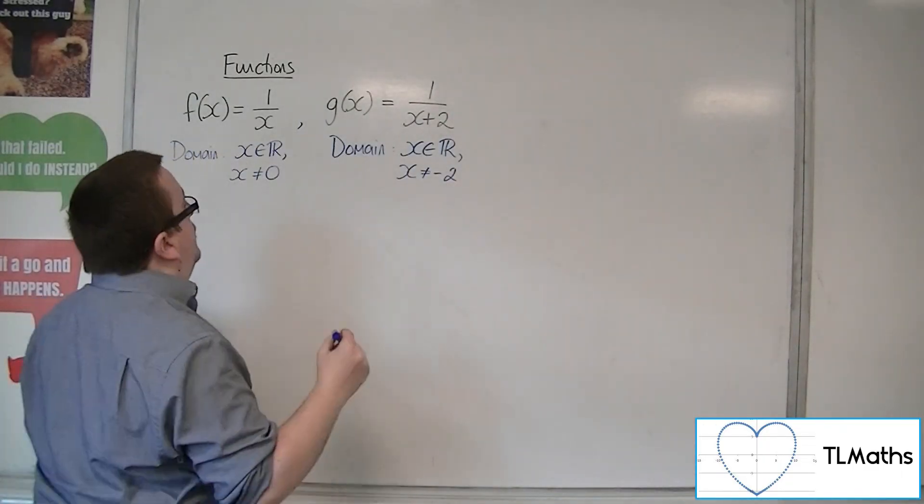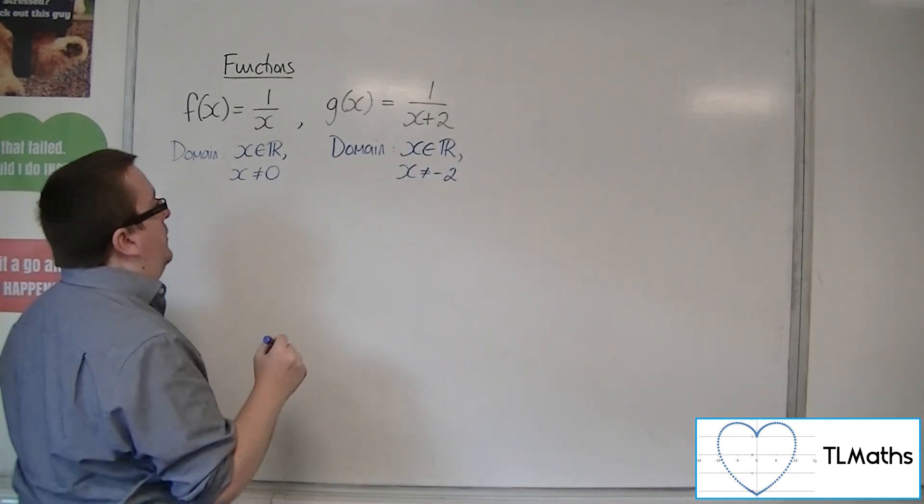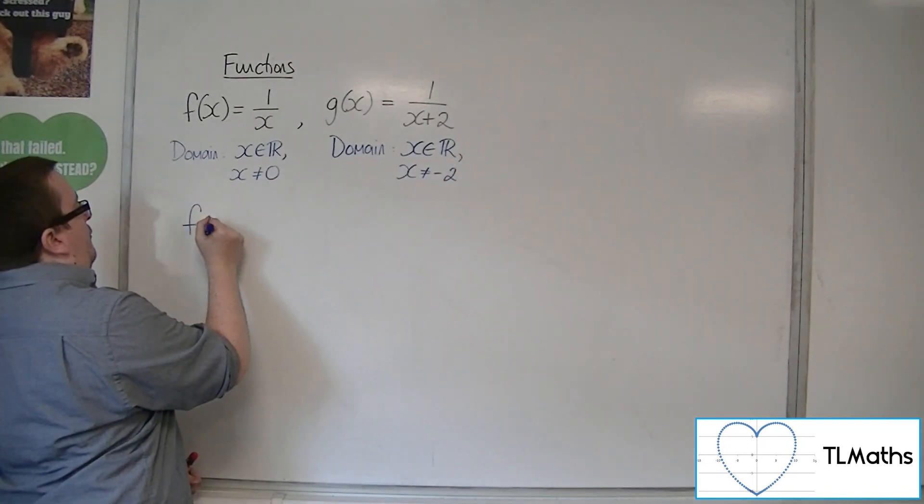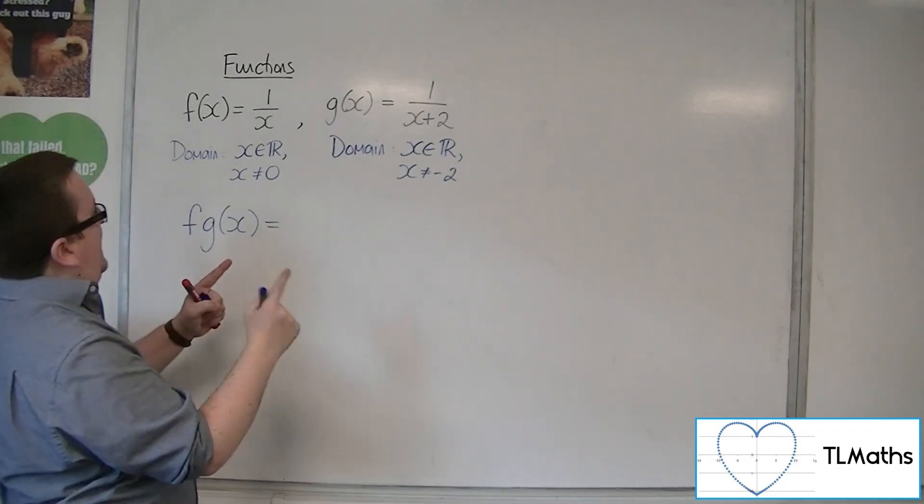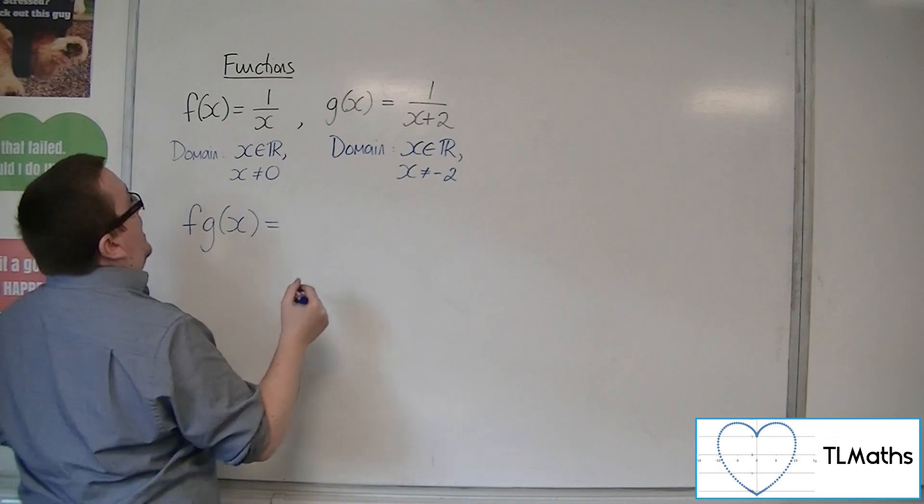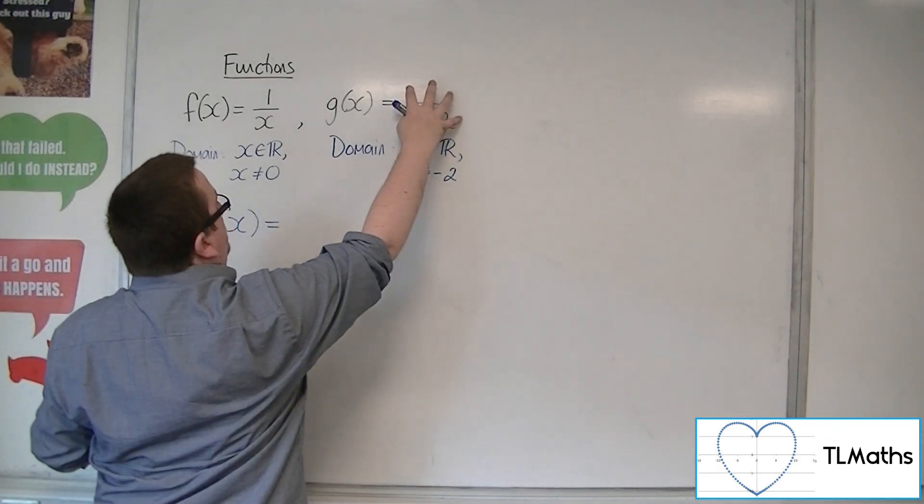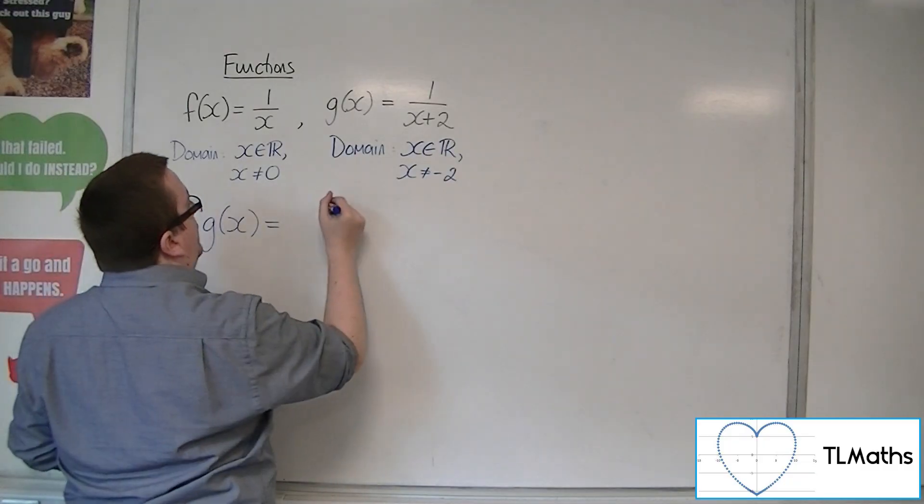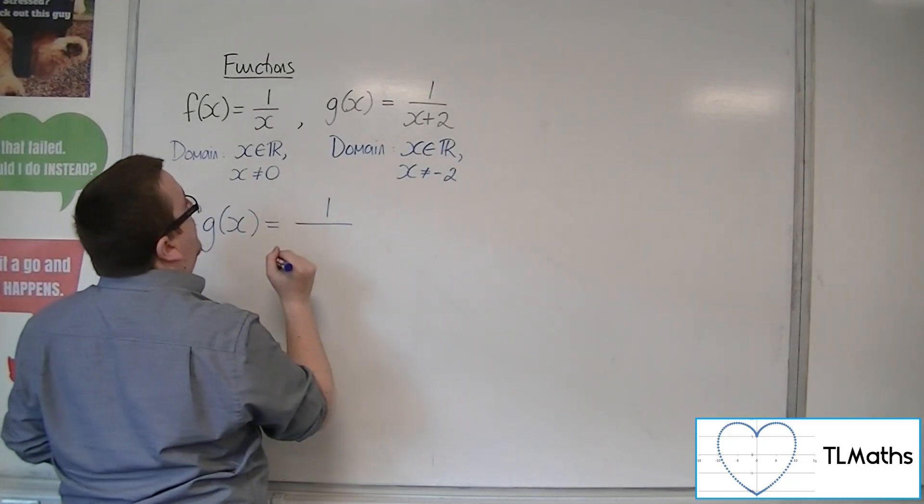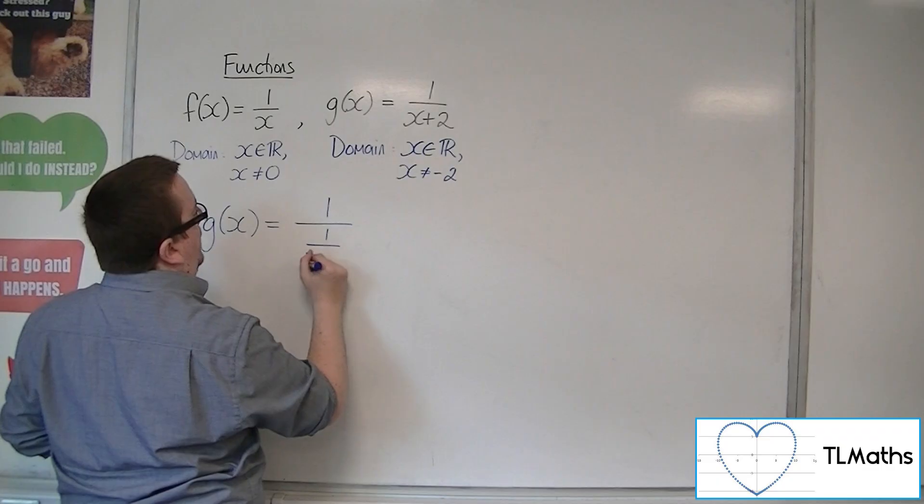Now, let's have a look at f of g of x. So g is going into f. We have 1 over x plus 2 being substituted into 1 over x, so we get 1 over 1 over x plus 2.